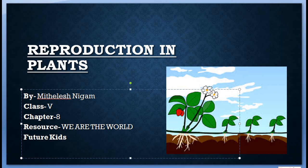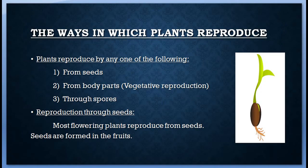Chapter 9: Reproduction in Plants. There are three ways in which plants reproduce: from seeds, from body parts, and through spores.